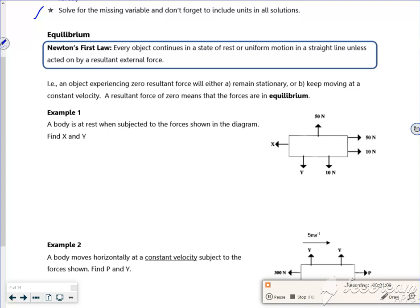So an object has got a zero resultant force if it's stationary or it's got a constant velocity. So a constant velocity, my acceleration is zero. So if I use F equals MA, forces equal mass times acceleration, if I'm saying that my acceleration is zero, I'm saying that my force is zero. Right, so let's have a look at this one.